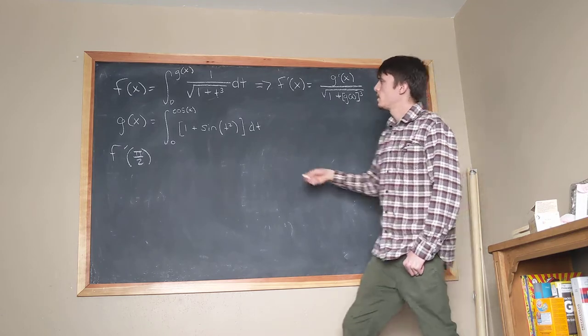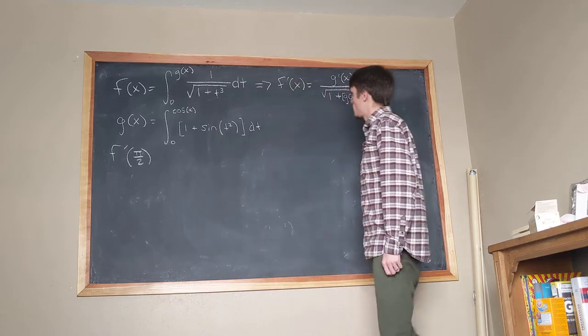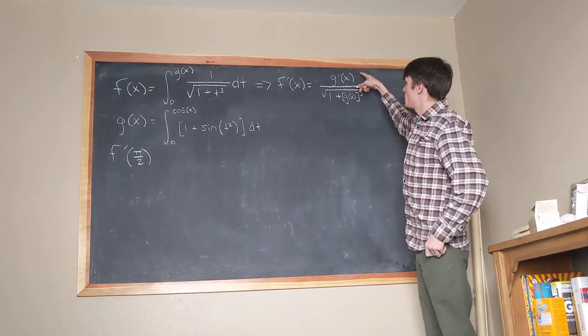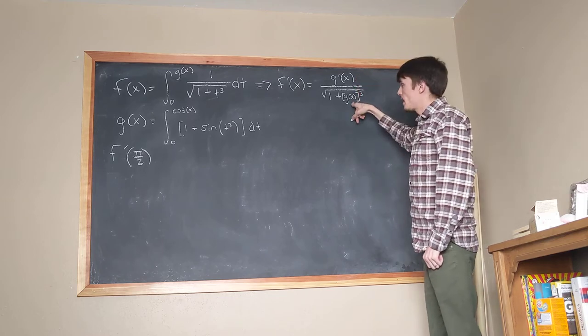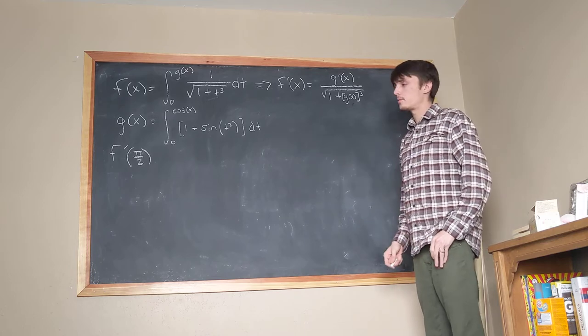And then we're going to subtract the derivative of 0 times this thing. Hey, that's 0, so I don't need to subtract anything, it turns out. Okay, so that's our f prime of x. Looks a bit gross. So we're going to need to get a handle on g prime of x and g of x if we want to have a chance of calculating f prime of pi over 2.